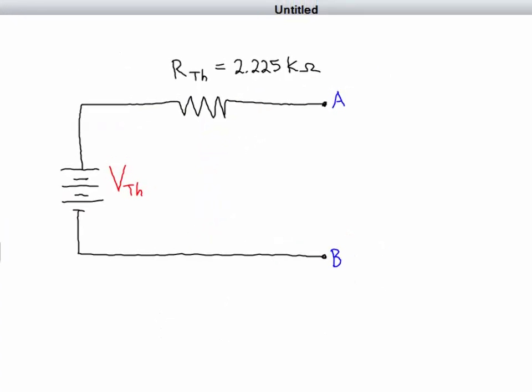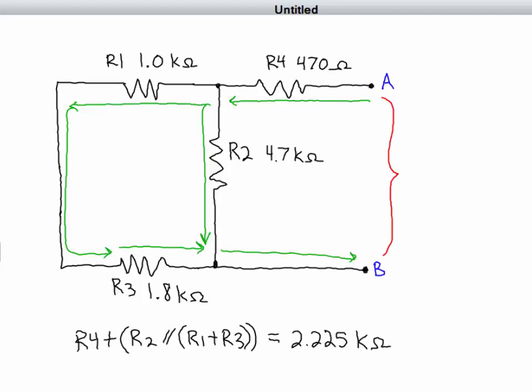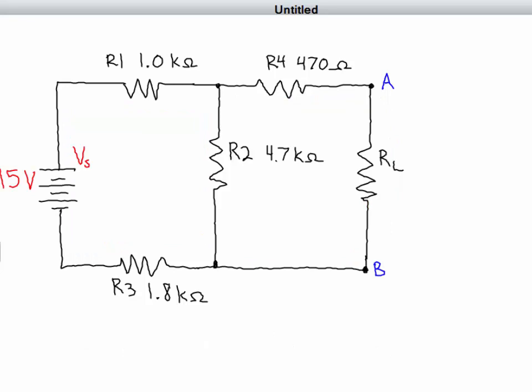Now we need to find a Thevenin voltage between points A and B. When you look at this circuit, the voltage between A and B would be the same as the voltage drop across resistor 2 because they're in parallel. With the load resistance out of the circuit, no current flows through resistor 4, so it has a zero volt difference on either side, zero voltage drop.